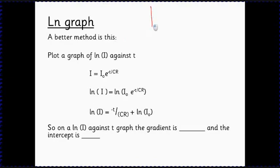If we take that graph which we've seen is a curve, what we'd really like is always to turn that graph into a straight line. Well we know the equation of that curve: I equals I naught e to the minus t over CR.